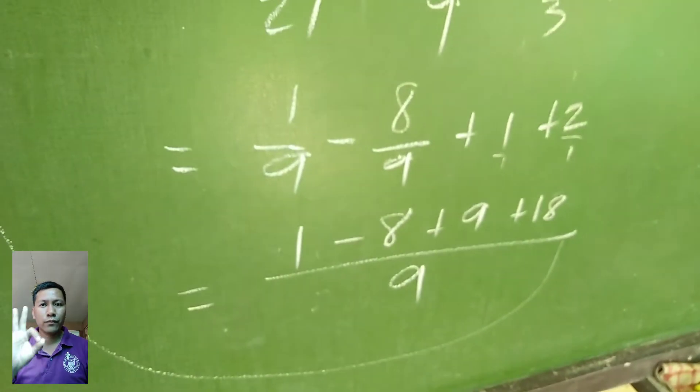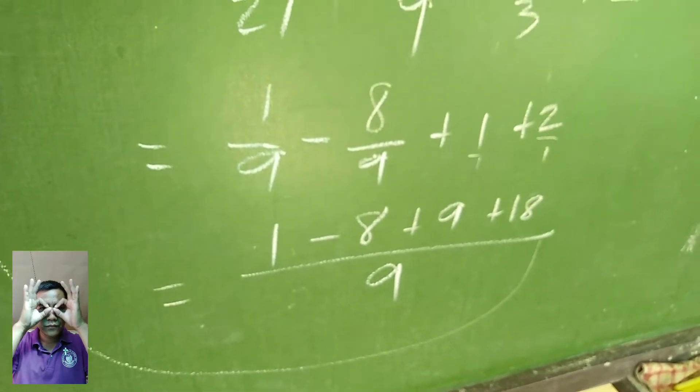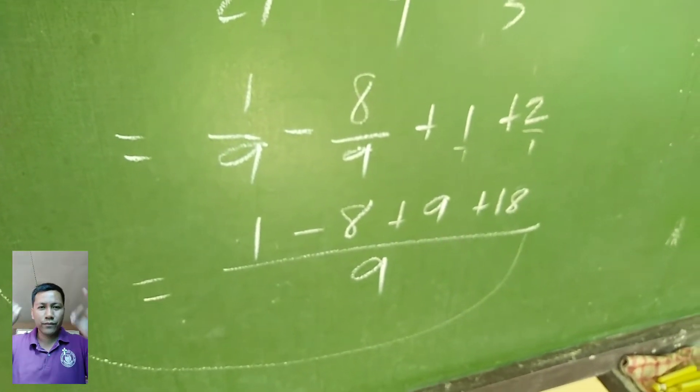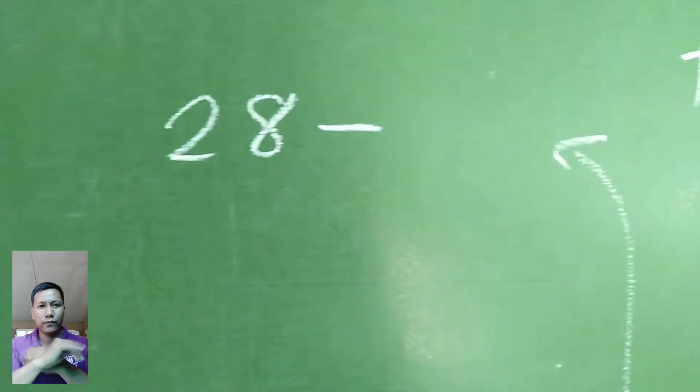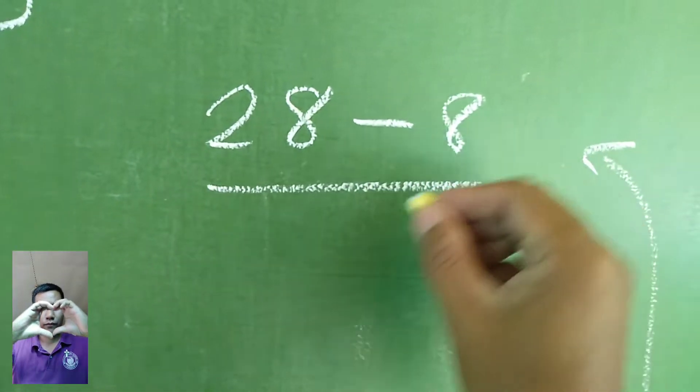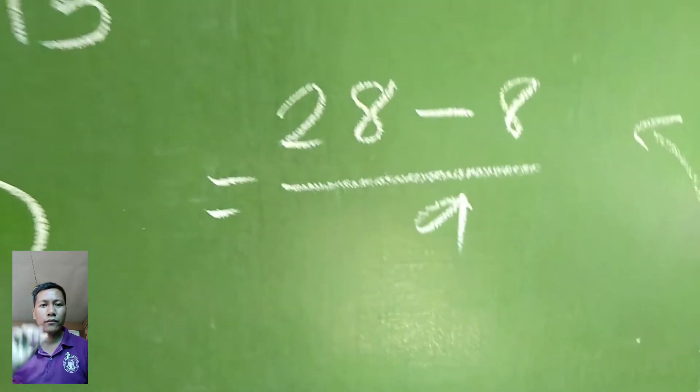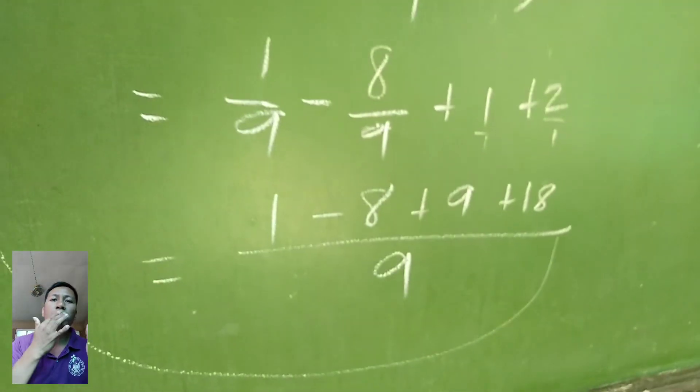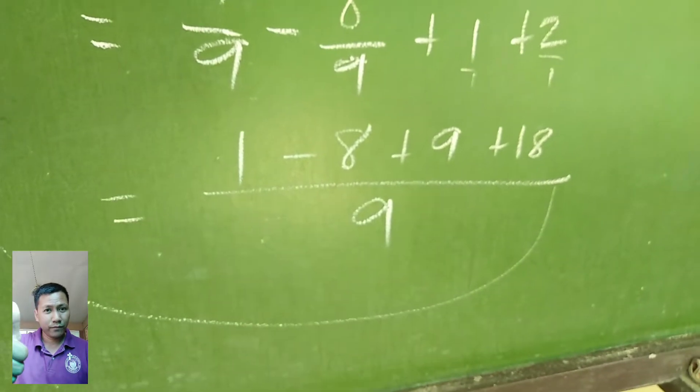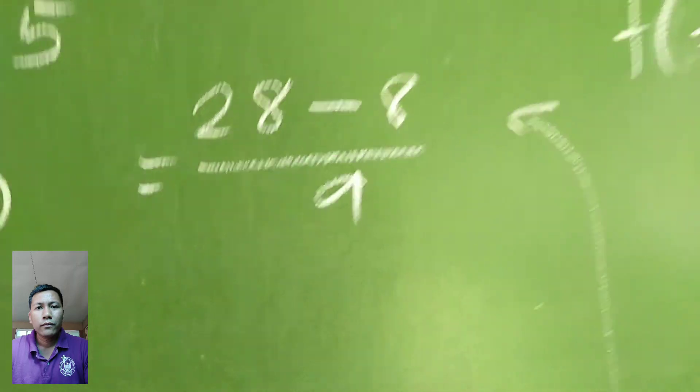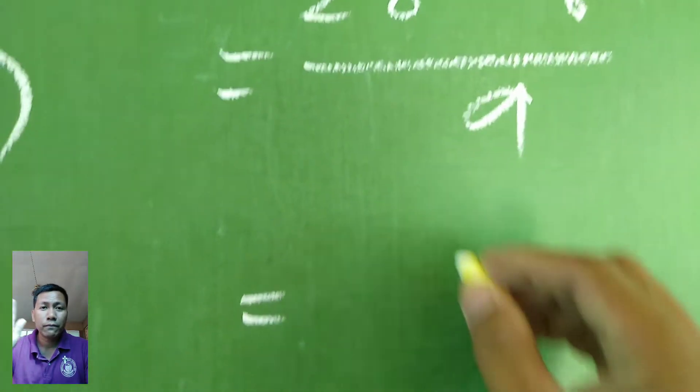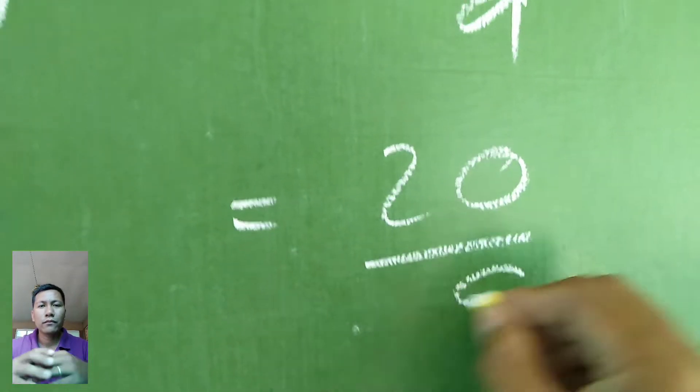Continue. So we have 1 minus 8 plus 9 plus 18. So we have the answer is 28 minus 8 over 9. What did we do here? All the positive numbers, 1, 9, and 18 I added. And then minus 8. So we have equal to 20 over 9.